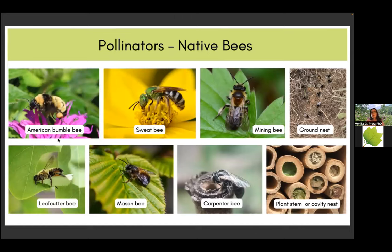When we talk about pollinators, the first and most important group to mention are bees. Tennessee Environmental Council's Generate Some Buzz focuses on native bees. Honeybees are not native to North America — they are very important for our agriculture, but they are originally a European species. What we focus on is native bees. Most of them are actually solitary bees, not forming large colonies like honeybees. There are about 4,000 different species of native bees in North America, and just in Tennessee we have about 350 different species.